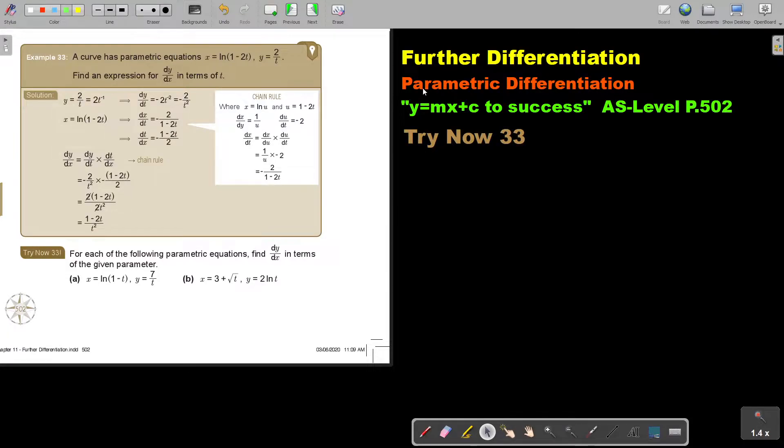In this video, we will continue with parametric differentiation. You will find this on page 502 in the Namibia AS level mathematics textbook, y equals mx plus c to success.